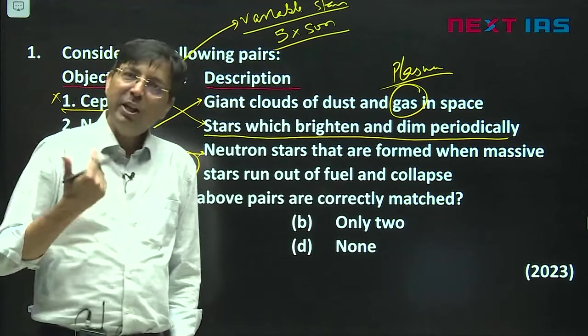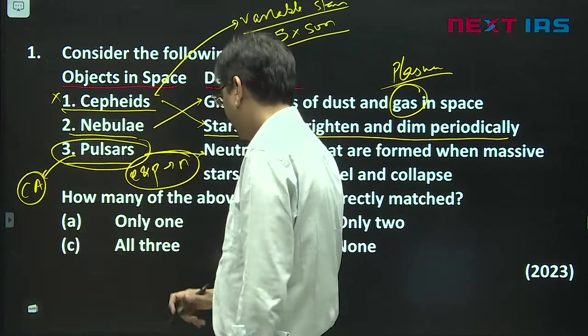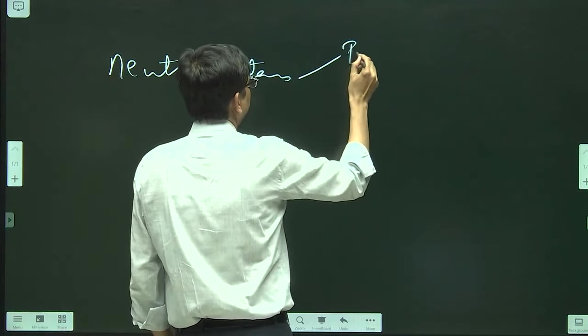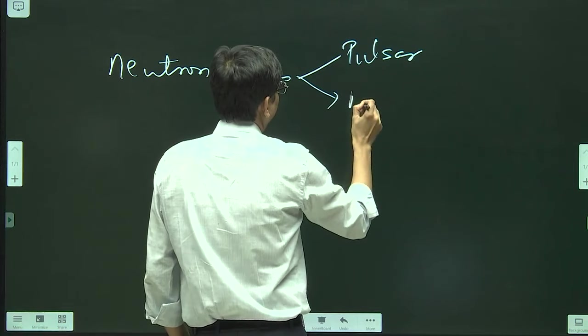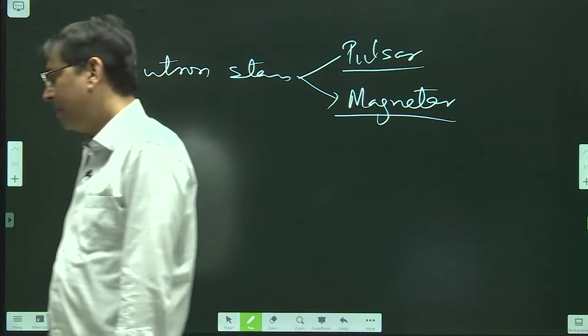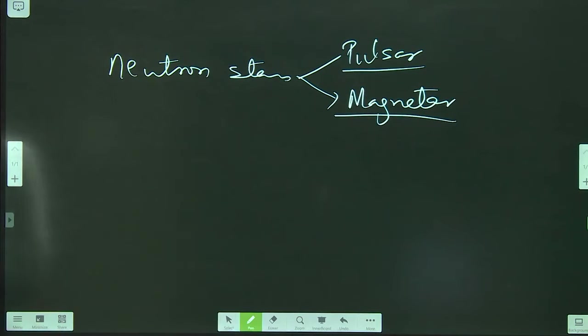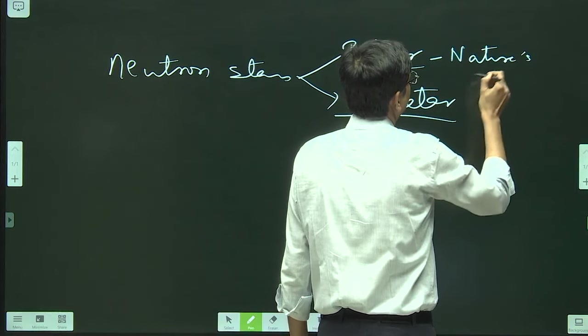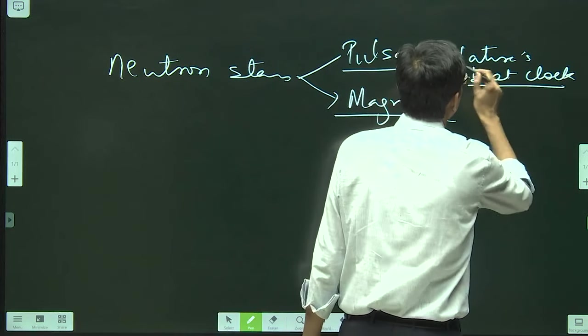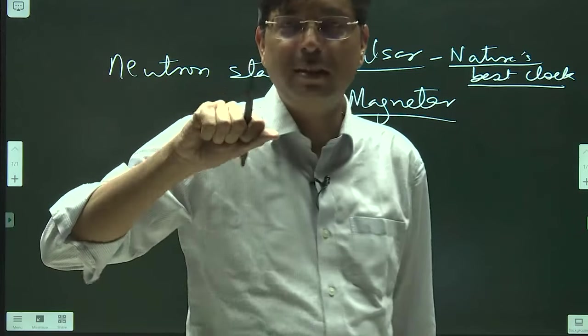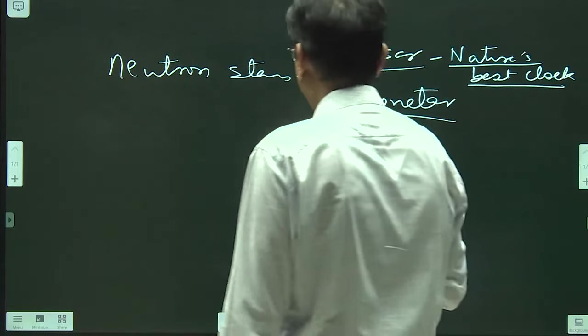Within the neutron star there is a category. There is a category called Pulsar and there is a category called Magnetar. Pulsars are known as Nature's Best Clock. What is Pulsar? They are rapidly rotating stars and they emit light periodically.